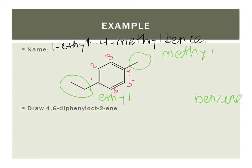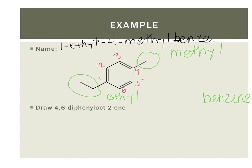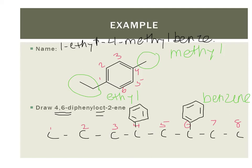Now I have oct here. I have oct, so that is going to indicate eight carbons. Four, five, six, seven, eight. Four, six diphenyl is indicating that I have two phenyl rings, so two benzene substituents off of carbons four and six. So there we go.